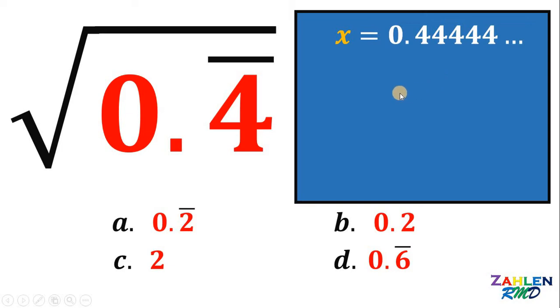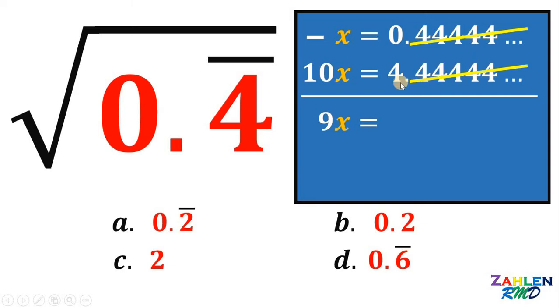Next, multiply 10 on both sides. If we do that, we get 10x equals 4.444444 forever. Then, we're going to subtract the first equation from the second equation. If we do that, we get 10x minus x will give us 9x and is equal to 4.44444 forever minus 0.44444 forever. All 4s after the decimal point cancel out. It follows that we have 4 minus 0 or simply just 4.